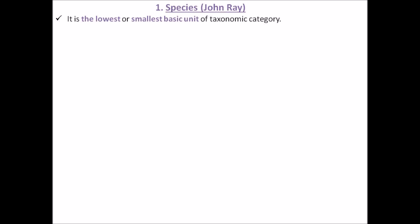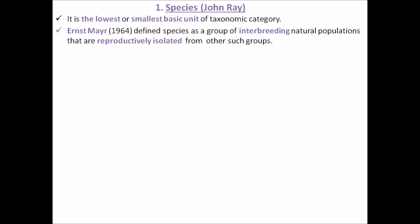Coming to the definition of species: this special definition was given by Ernest Mayr. He defines species as 'a group of individuals of the same type which are capable of interbreeding but are reproductively isolated from the others.' For example, dogs will breed with dogs and cats with cats, but dogs won't cross-breed with cats — they are reproductively isolated.